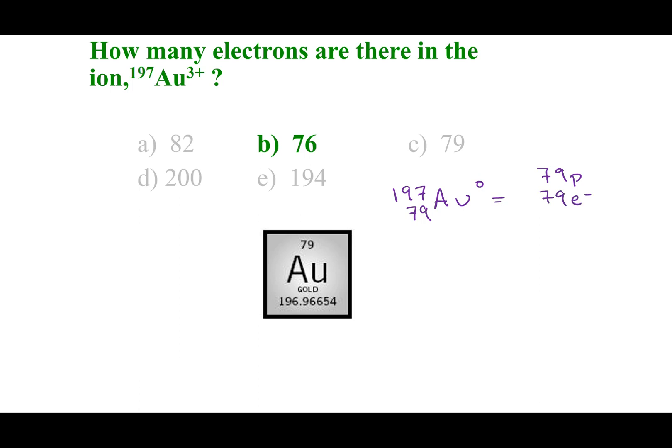What I want to do is I want to get a positive 3 charge on there, meaning I want more positives than negatives. And remember, I can only change the number of electrons. So, what I want to do is I want to decrease the number of electrons because I want more positive. And I want to go ahead and decrease it by 3.